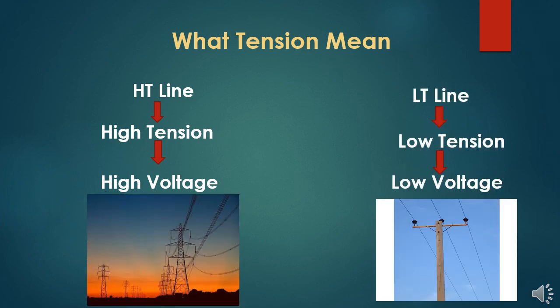First of all, we will know what LT line and HT line means. LT line means low-tension line, and low-tension line means low-voltage line. Because in electrical engineering, we normally denote tension from voltage. So when you hear low-tension in electrical engineering, it means low-voltage line. And when you hear about HT line, it means high-tension, which is high-voltage line. Basically, we divided the transmission into two parts: high-voltage line and low-voltage line.